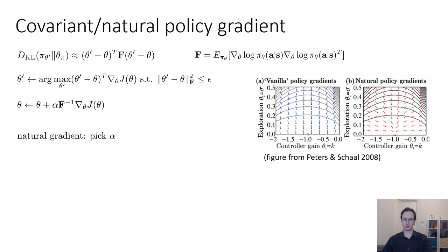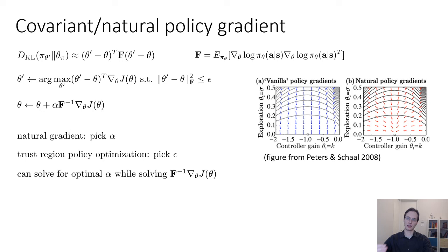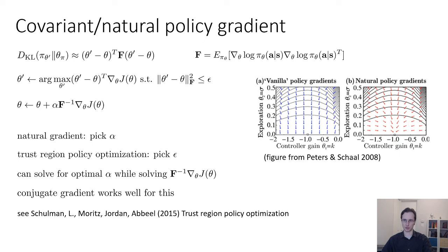Now there are a number of algorithms that use this trick. The classical one, natural gradient or natural policy gradient, selects alpha. A more modern variant called trust region policy optimization selects epsilon and then derives alpha. So the way that you derive alpha is by solving for the optimal alpha at the same time while solving for F inverse grad theta J theta. We won't go into how to do this, but the high-level idea is that by using conjugate gradient, you can actually get both alpha and the natural gradient simultaneously. So for more details on that, you can check out the paper called trust region policy optimization. The takeaway from all of this is that the policy gradient can be numerically very difficult to use because different parameters affect your distribution to very different degrees. And you can address this by using the natural gradient, which simply requires multiplying your gradient by F inverse, where F inverse is an estimate of the Fisher information matrix. And you can do this efficiently by using conjugate gradient.